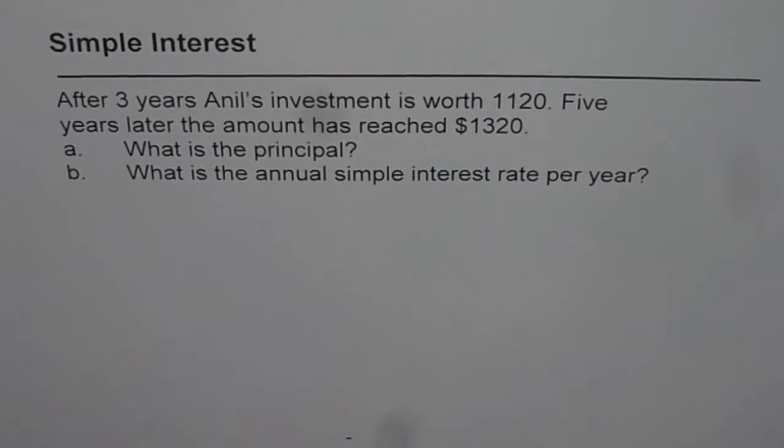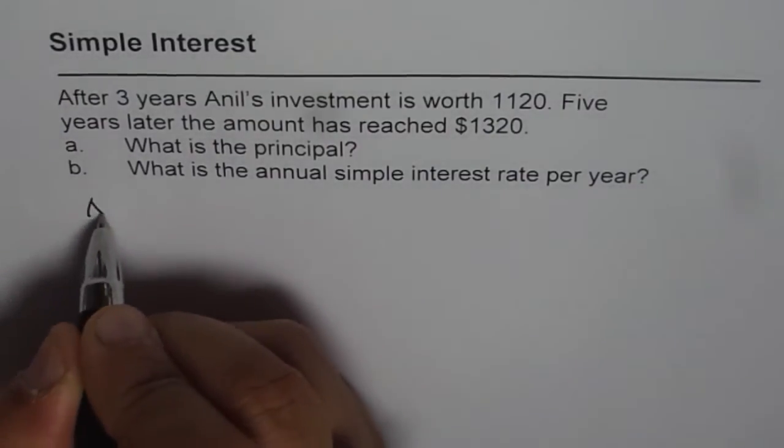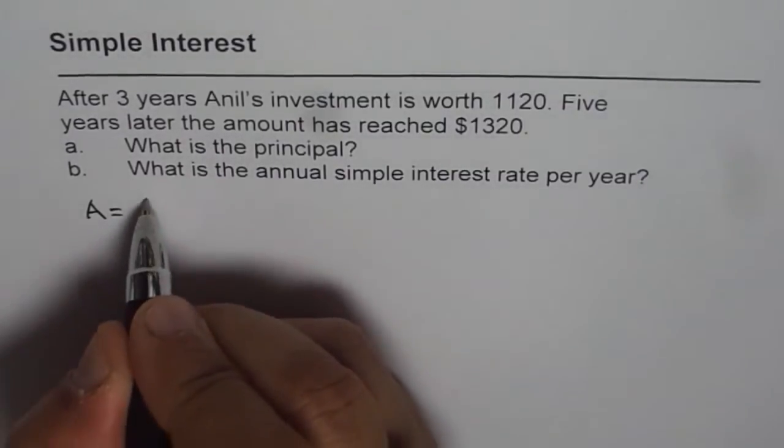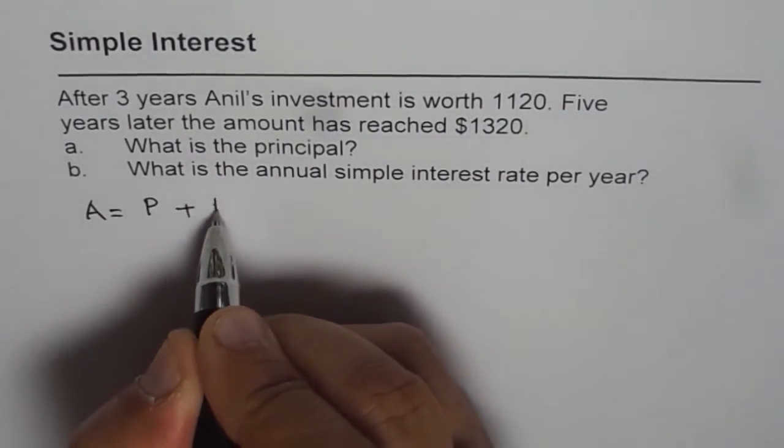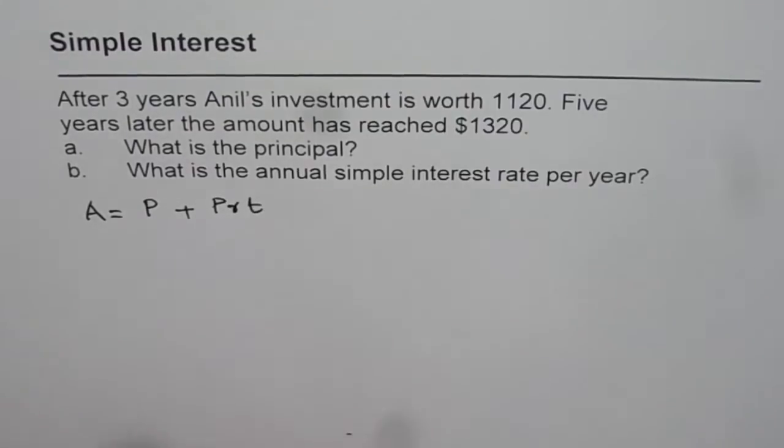So let's explore principal interest and figure it out. Now, amount is equal to principal invested plus the interest which is P times RT.